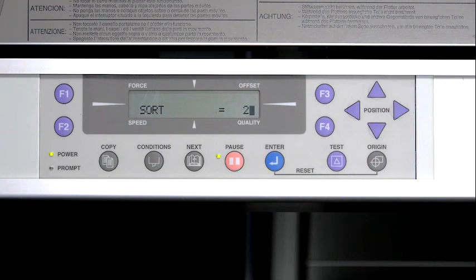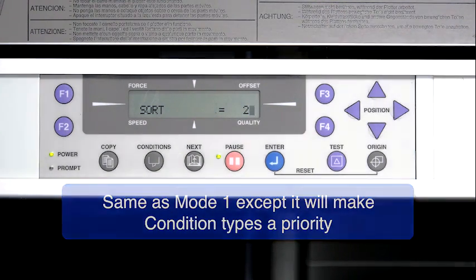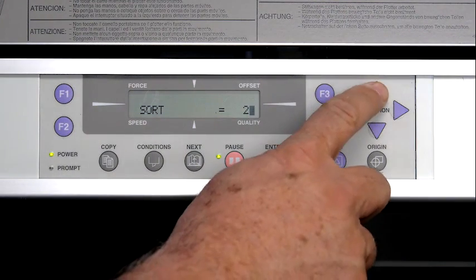Mode 2 does exactly as Mode 1, except that it will make sure that the cutting condition is done last. For instance, if a job has both cutting and plotting, it will plot with the pen prior to any cutting.